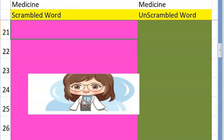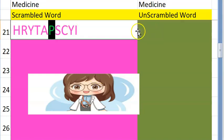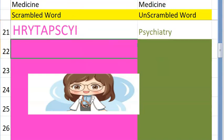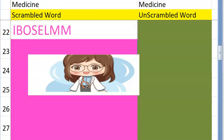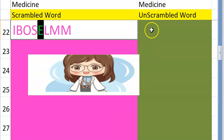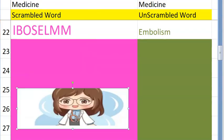Let's look at a few more. The twenty-first one — do you want a clue? It starts with a P, it's a branch of medicine that deals with the mind — psychiatry. Very good! The twenty-second one — starting with E — something like blocking your vessels — it's an embolism. Very good!